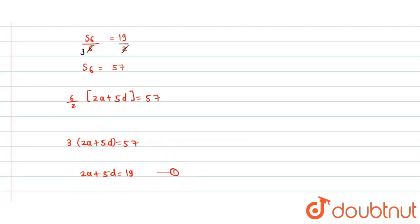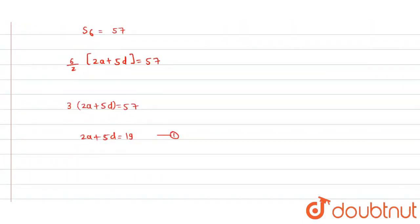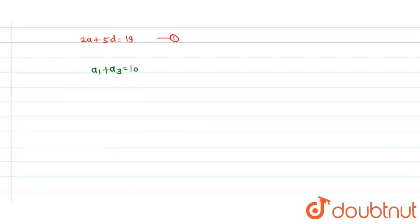Now the second equation: A1 plus A3 is 10. So a plus a plus 2d equals 10. Therefore 2a plus 2d equals 10, so a plus d equals 5. Let's say this is equation 2.